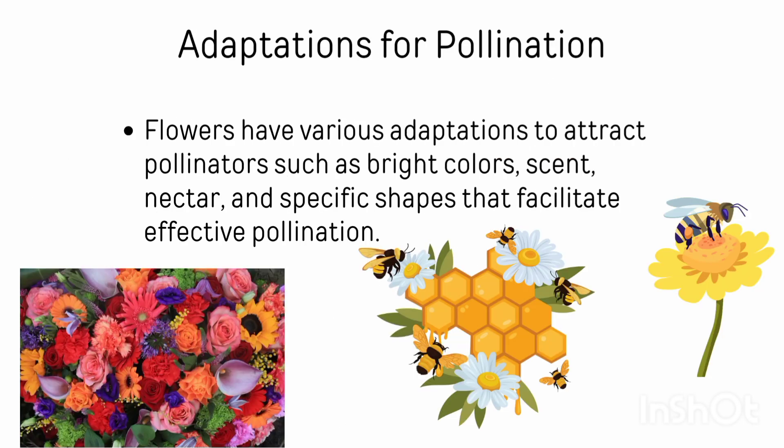Flowers have various adaptations to attract pollinators, such as bright colors, scent, nectar, and specific shapes that facilitate effective pollination. Flowers need to provide bright colors and scent or nectar so that pollinators are attracted to them, which helps facilitate pollination.